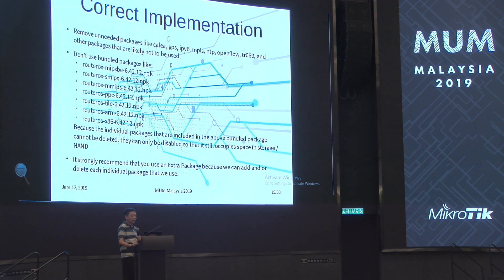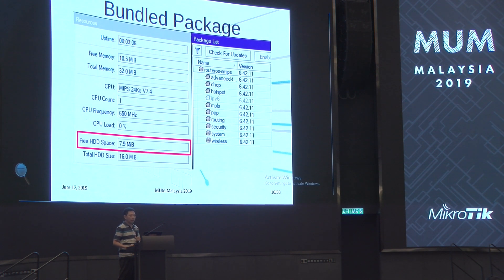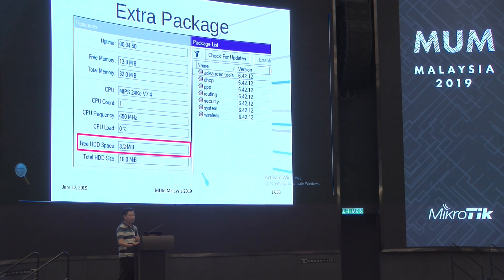It is strongly recommended to use extra packages, because we can add or delete each individual package that we use. When the customer needs OSPF, we add routing. When the customer needs VPN, we add PPP. On the bundle package, the free space is 7.9 MB; but after using extra packages, it increases to 8.3 MB — 400 KB of extra space on the router. This is problem number one.